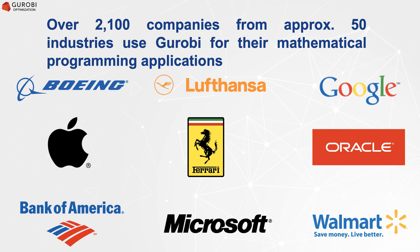Mathematical programming applications typically optimize the operational efficiency of an organization. For example, the airline industry uses mathematical programming to decide the routing of flights, staffing, maintenance, and more. Many professional sport leagues, including the NFL, plan their game schedules using mathematical programming. In manufacturing, companies use it to plan and manage the procurement, production, and distribution of their products.